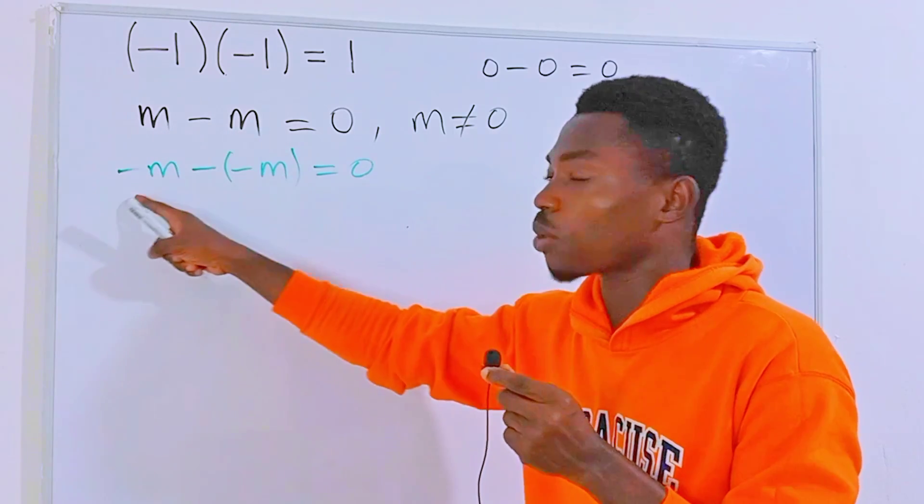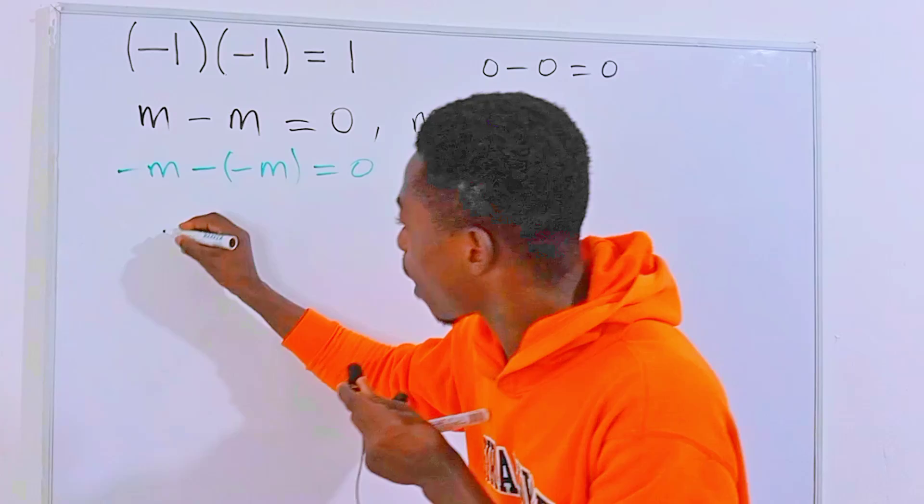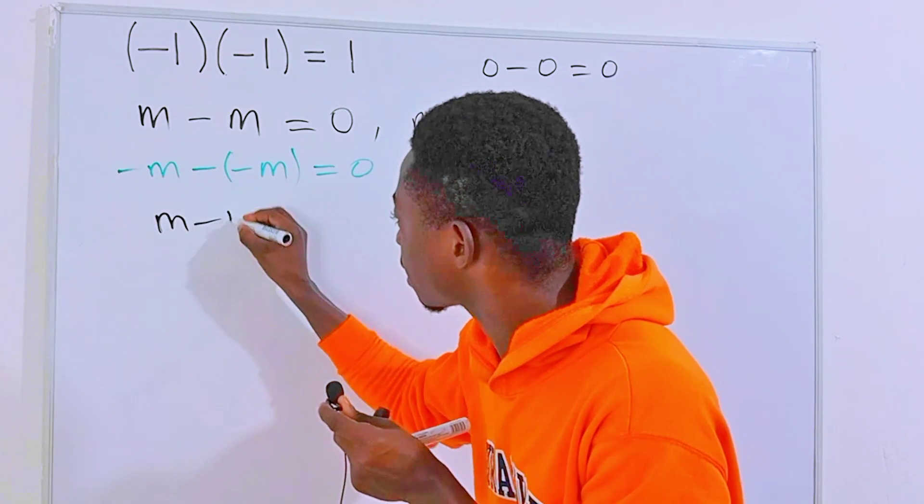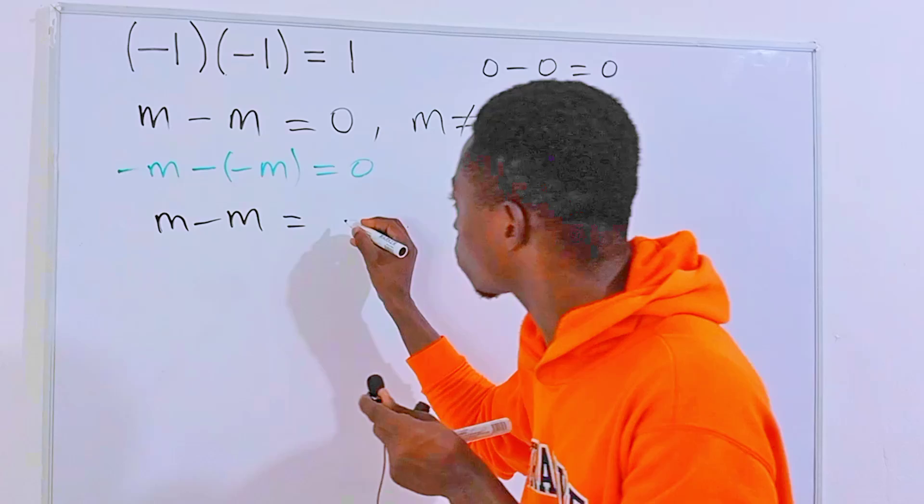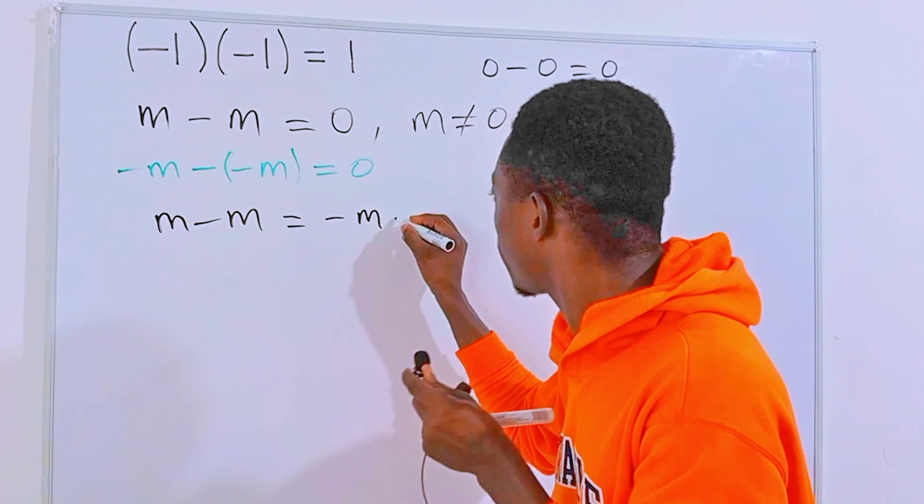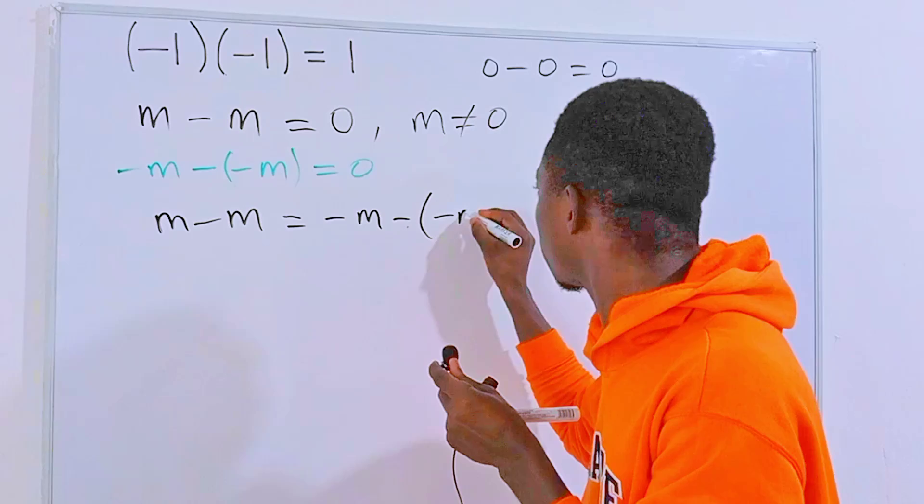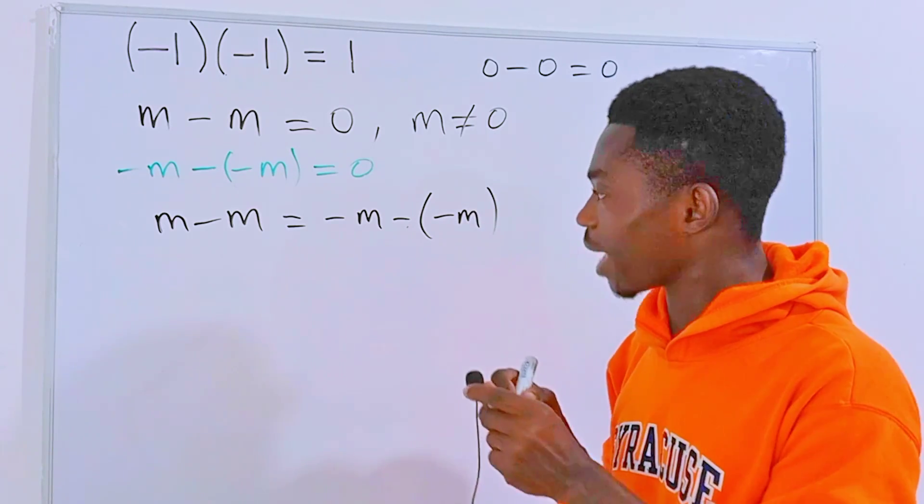So mathematically we will have m minus m is equal to minus m minus minus m, just like this.